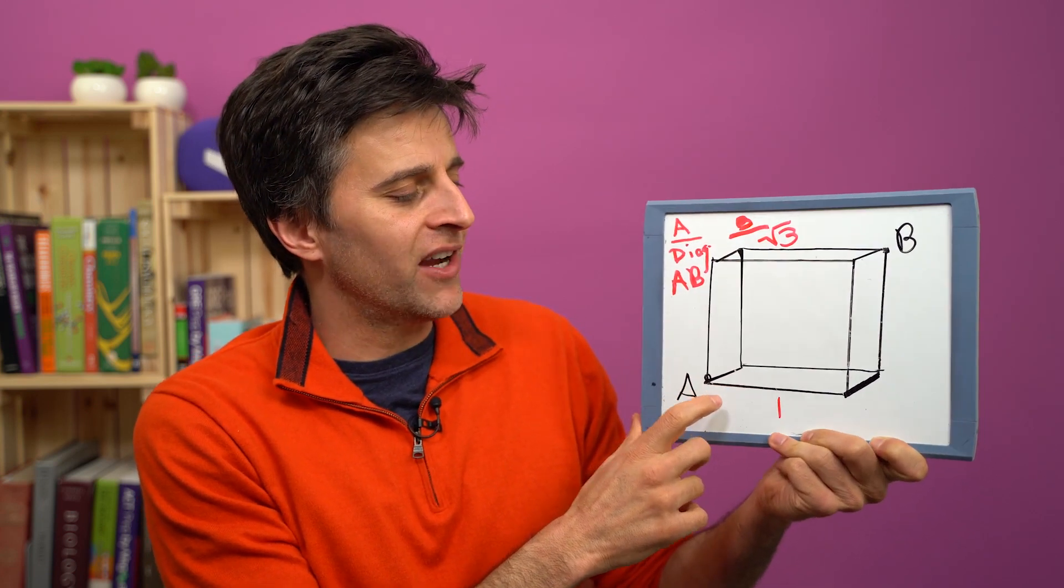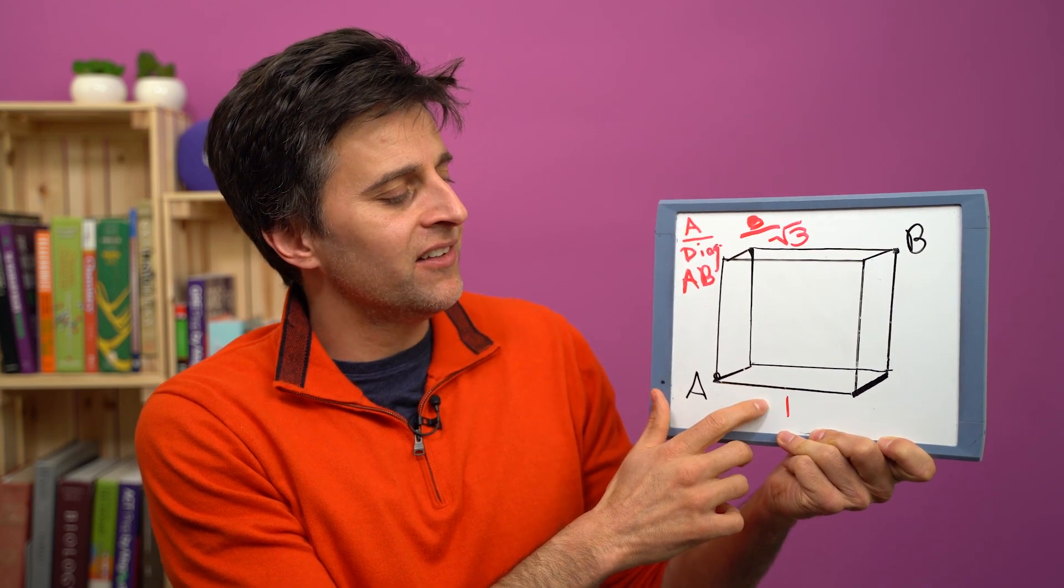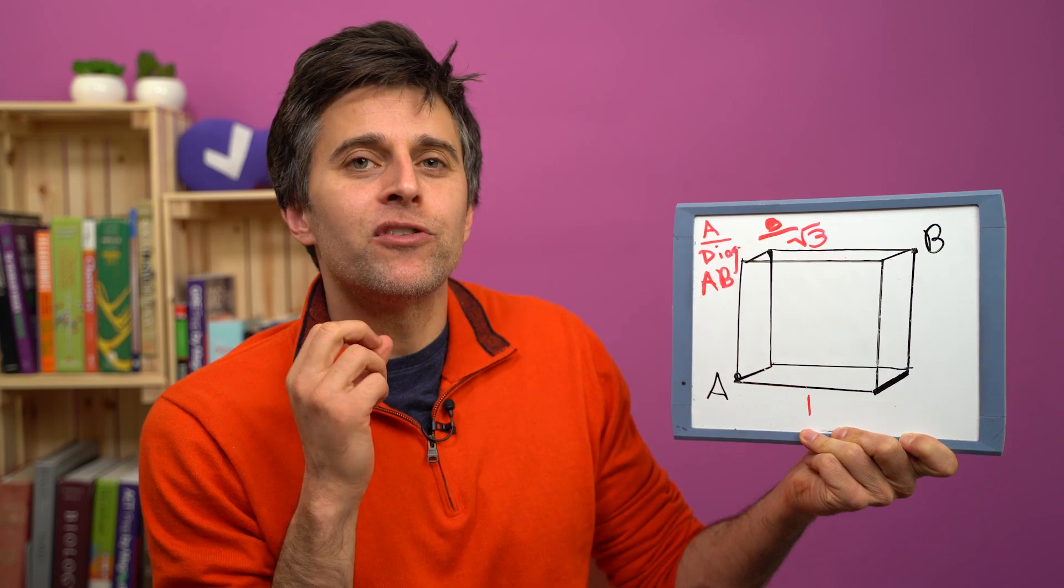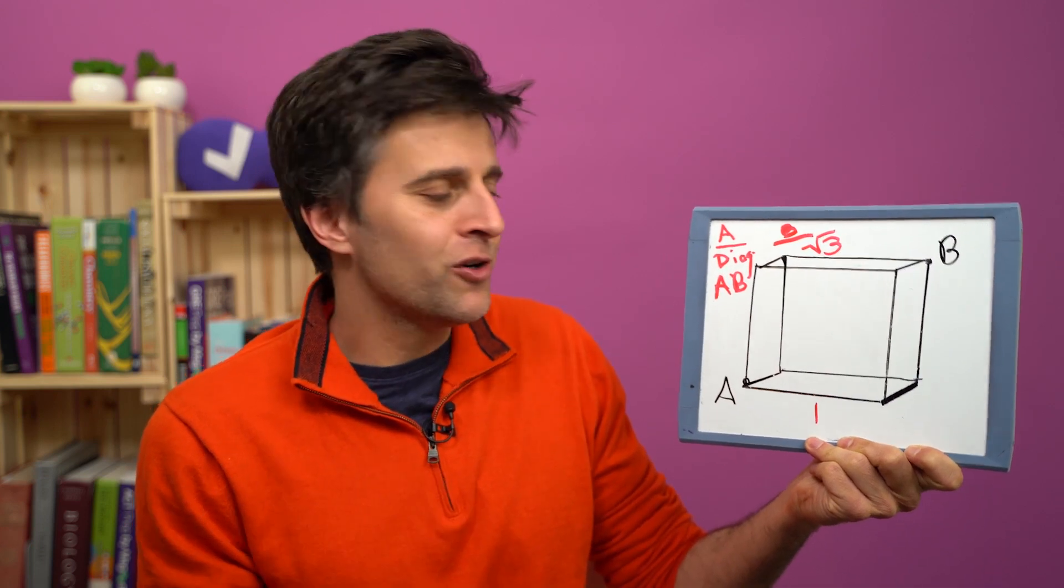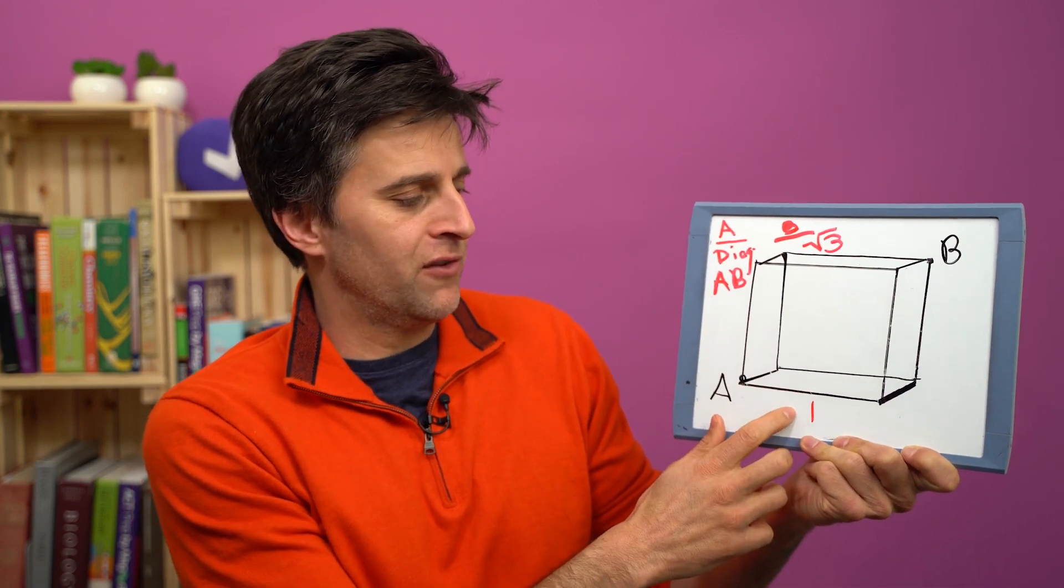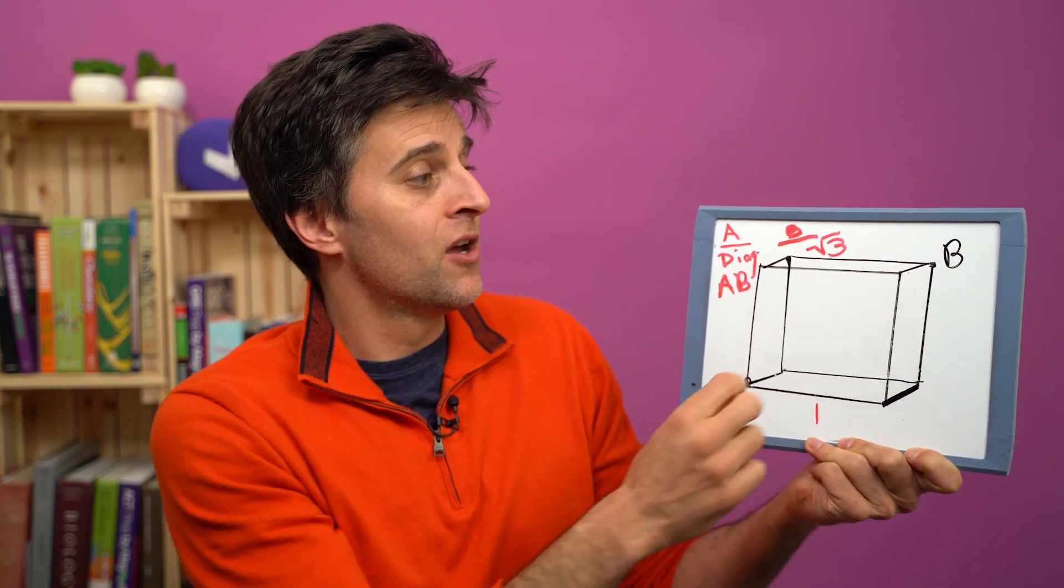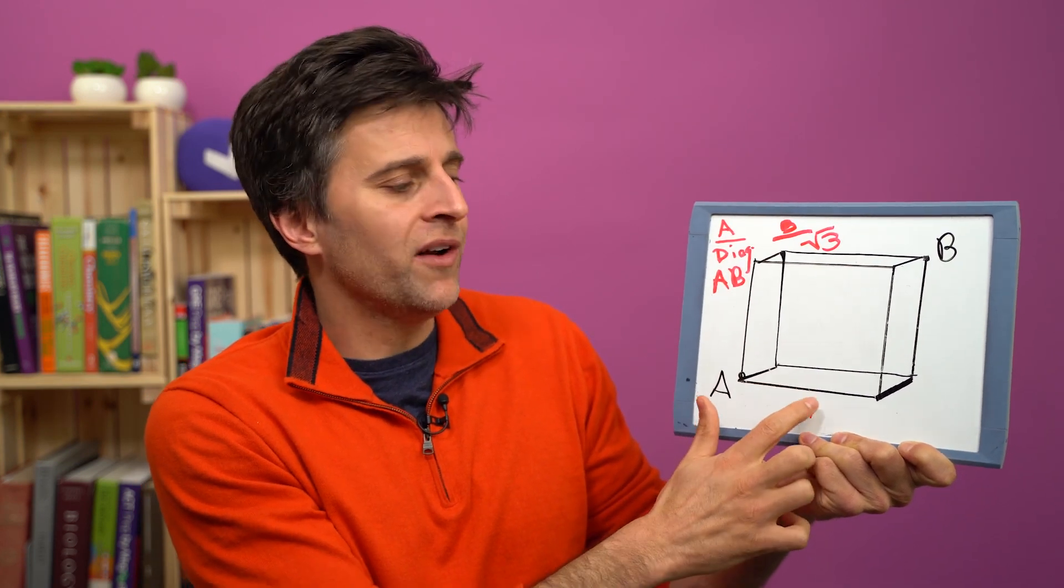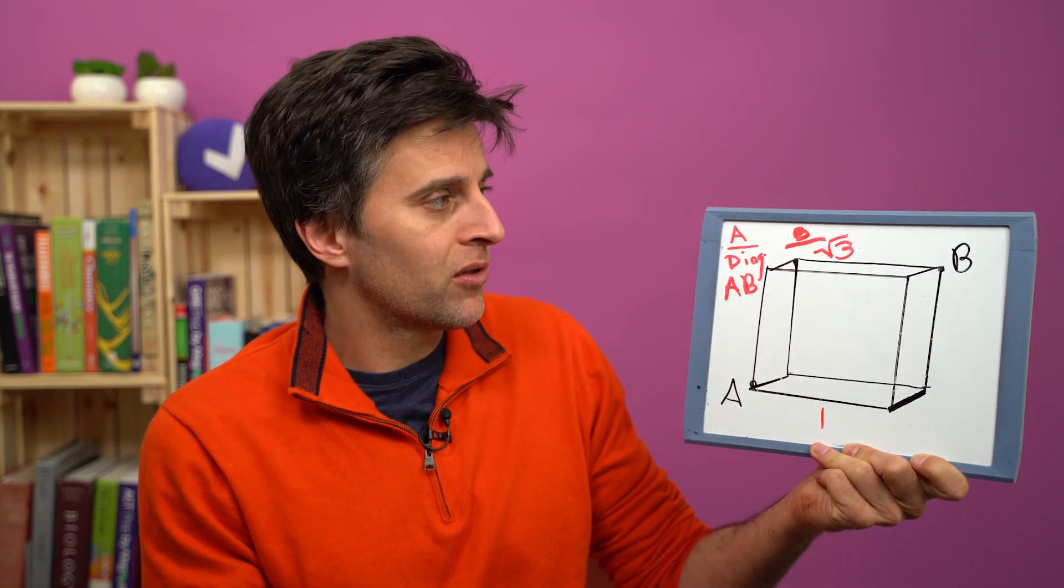Whatever this side is, in this case it's 1, whatever the side is, times it by the square root of 3. That's all you have to do. So if this was, for instance, side 4, then we would know AB is 4 times the square root of 3. Here though, it's just 1, and 1 times the square root of 3 is simply the square root of 3.